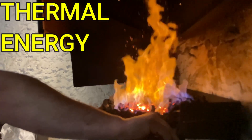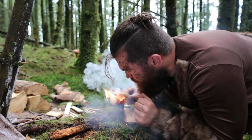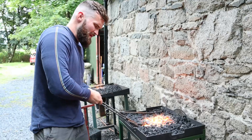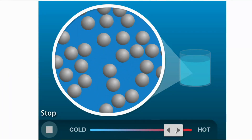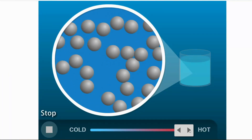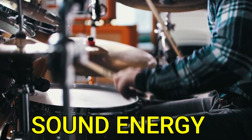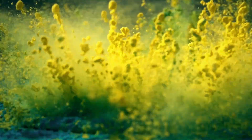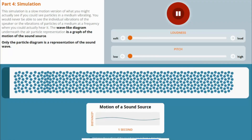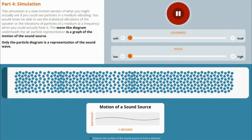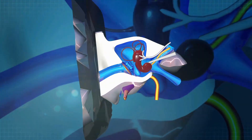Heat energy, also known as thermal energy, is a form of kinetic energy. This is because heat causes the tiny particles that make something up to vibrate and move more and more, which is pretty much what heat is. Sound energy is also a form of kinetic energy — sound energy is caused when particles in a solid, liquid, or gas vibrate and move in a wave to your eardrum, where it is detected as sound.